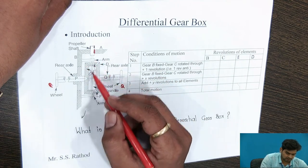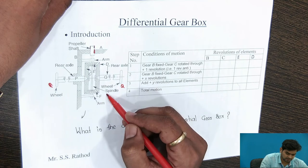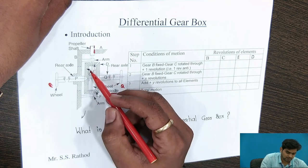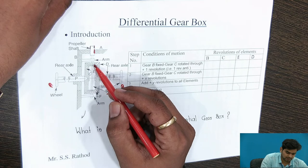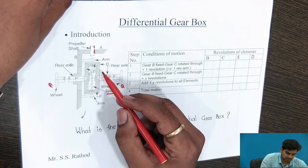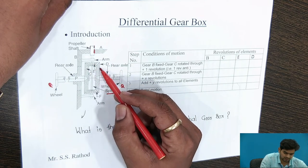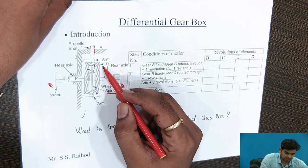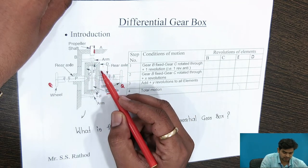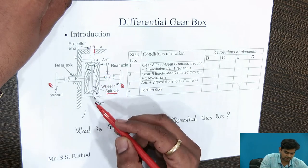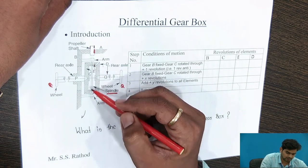These are the arms. The arms and gear E are connected by a spindle. Gear C meshes with gear E. Gear E meshes with gear D. The number of teeth on gears C and D are the same, as well as the number of teeth on gears E and F are the same.